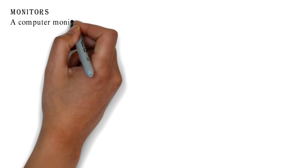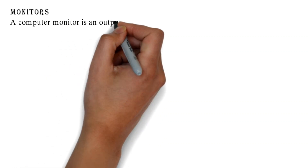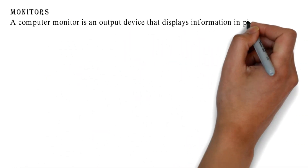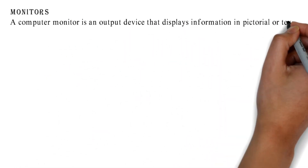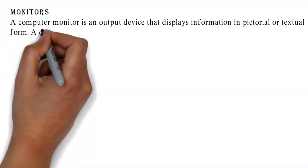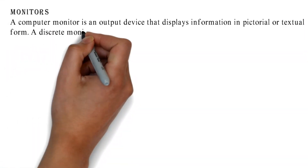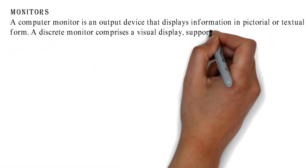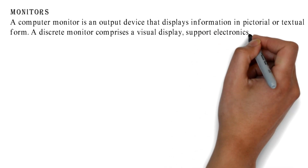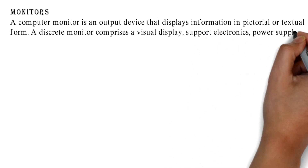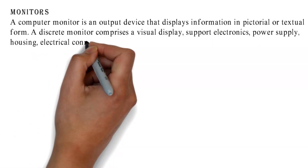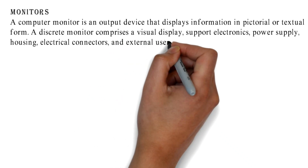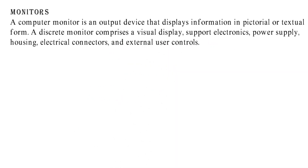Monitors. A computer monitor is an output device that displays information in pictorial or textual form. A discrete monitor comprises a visual display, support electronics, power supply, housing, electrical connectors, and external user controls.